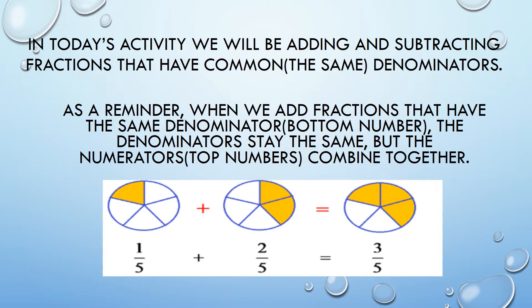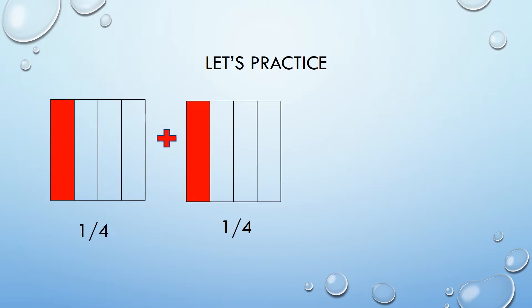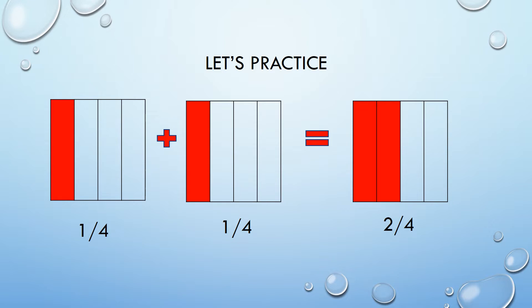In today's lesson, the fractions will look more like this. The three is the numerator and the five is the denominator. Let's practice together. Here's one-fourth. If we add another fourth, what do we come up with? One-fourth plus one-fourth equals two-fourths. You'll notice that the denominator, four, stayed the same, but the numerators, one and one, combine together to give us two.